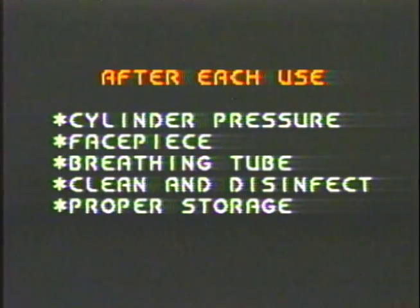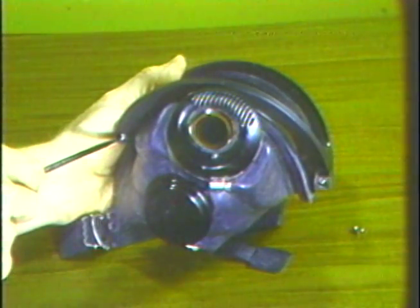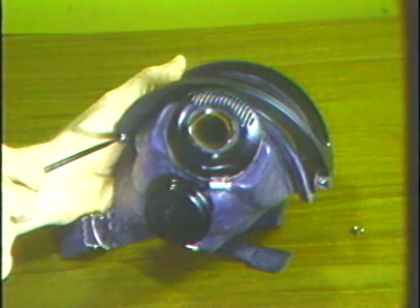Immediately after each use, each device must be inspected for damage and cylinder pressure. The apparatus is then cleaned and sanitized, and checked again by sight and sound for normal operation before storing in a ready position. At this time, look for cracked or broken parts in the face piece and breathing tube. Inspections of the exhalation valve must be limited to a visual check — do not remove the exhalation valve assembly. If scratched, the lens of the Ultra View face piece can be replaced easily by removing the two screws to release the retaining ring that holds the lens.